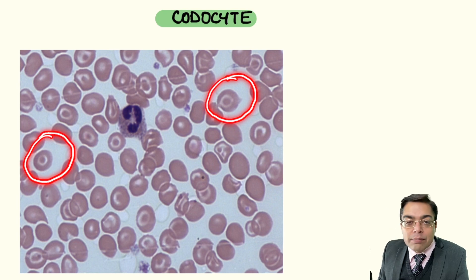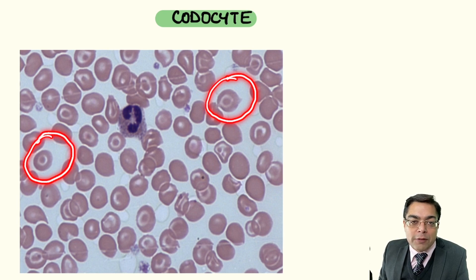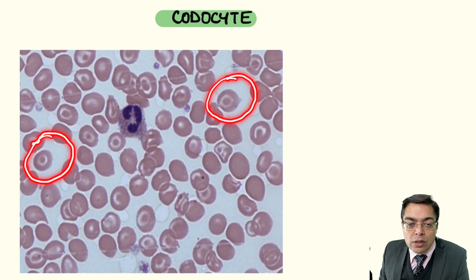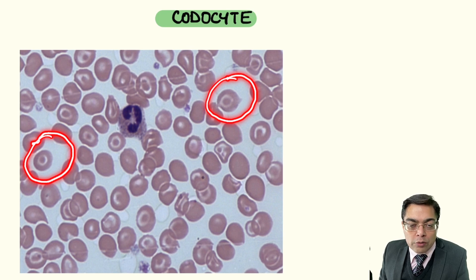These are examples of cells which are produced because of the mismatch between the surface area of a red blood cell vis-a-vis its volume. So whenever you are going to be having the presence of extra surface area, or whenever we are going to be having the presence of a reduced amount of hemoglobin, such cells are going to be seen in the peripheral blood smear.